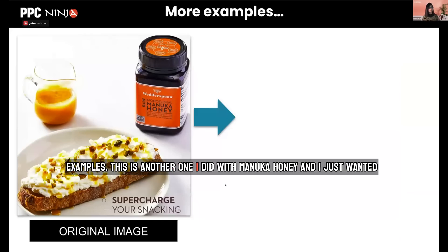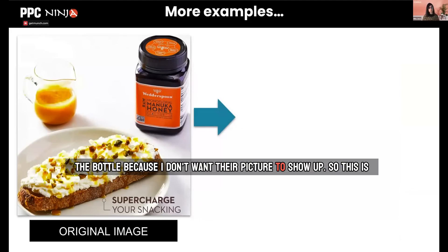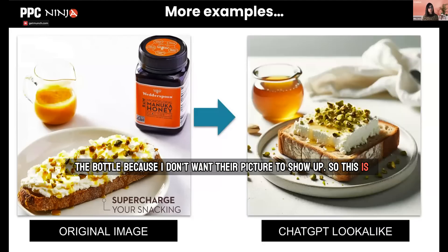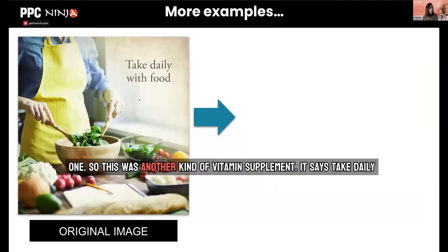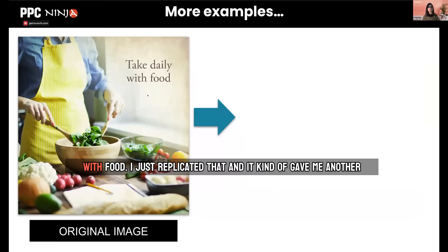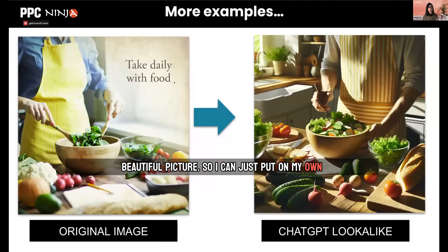This is another one I did with Manuka honey. I just wanted the ambience of it and I told ChatGPT, make one like this without the bottle because I don't want their picture to show up. This is what they did — it looks so amazing. I did another one with a vitamin supplement. It says 'take daily with food.' I just replicated that and it gave me another beautiful picture, so I can just put on my own captions, et cetera.